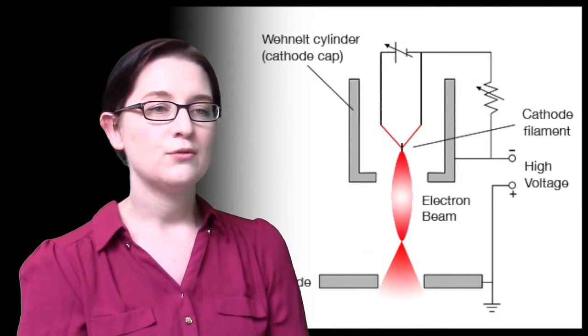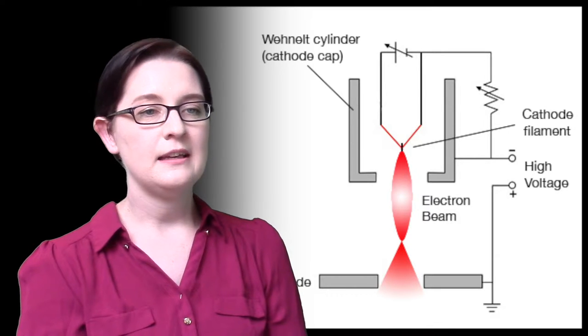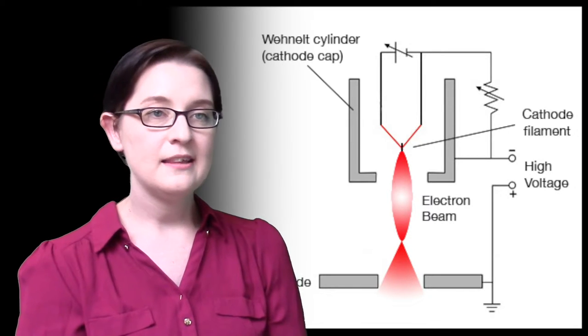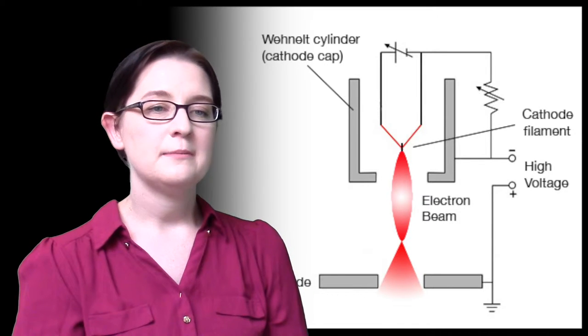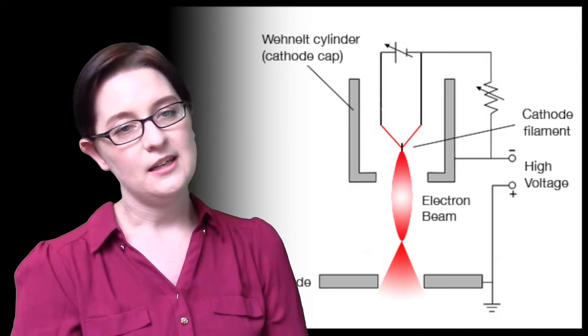This high tension (HT) controls the accelerating voltage of the emitted electrons. The higher the accelerating voltage, the higher the resolution, but there is a greater chance of specimen damage plus a reduction in contrast.